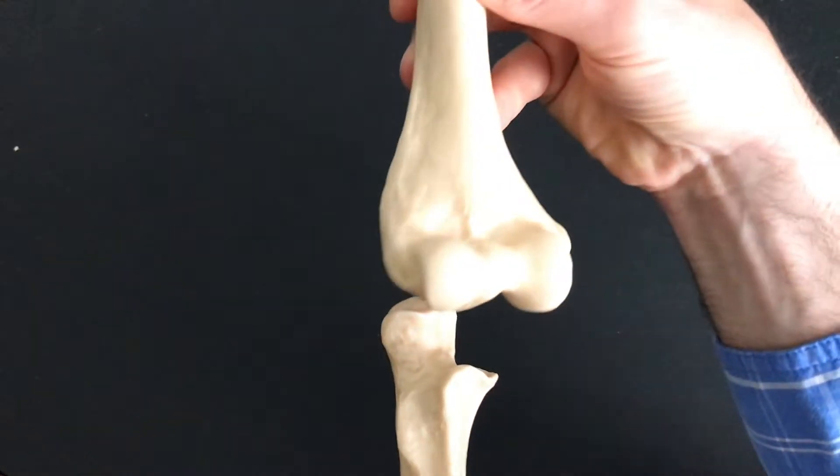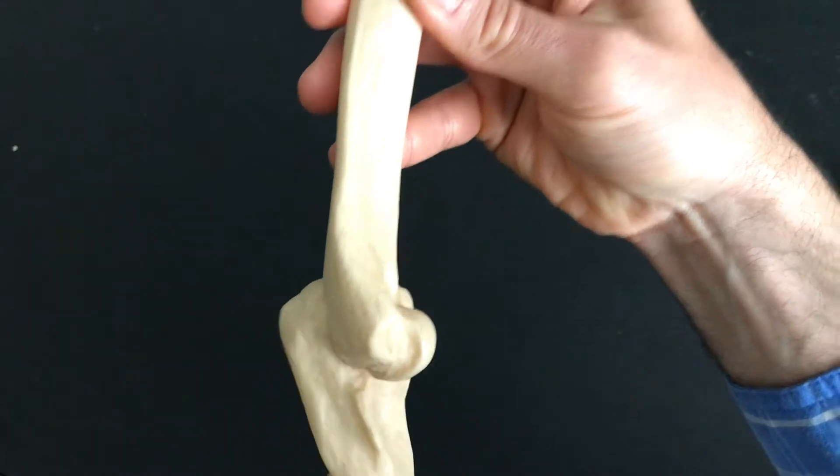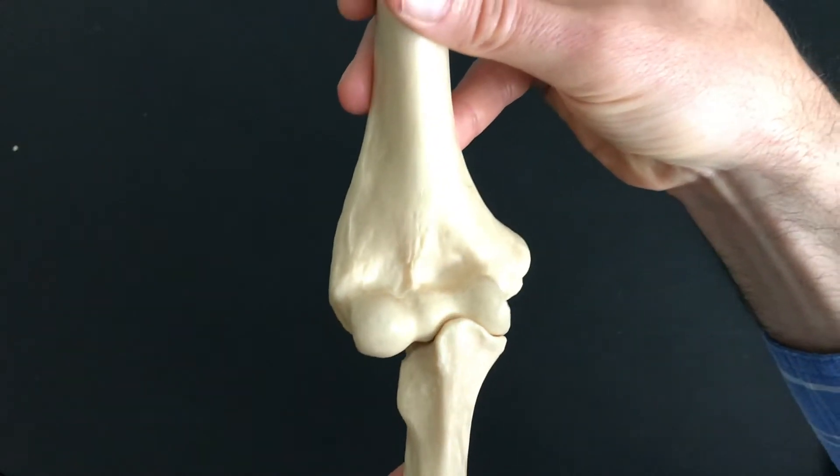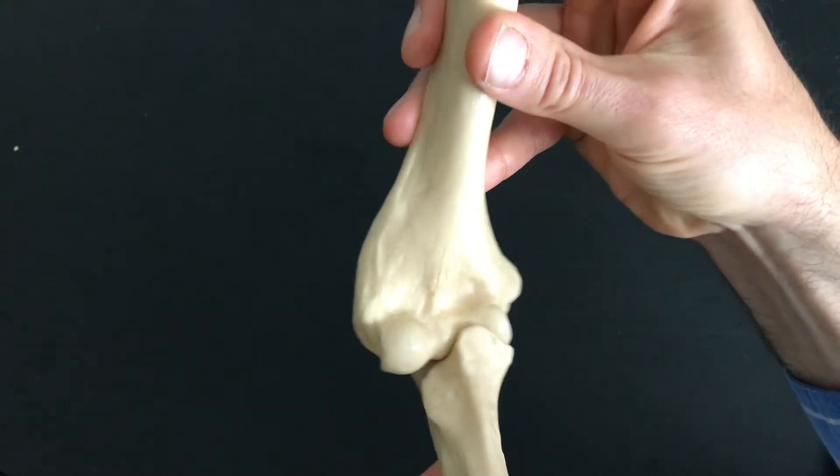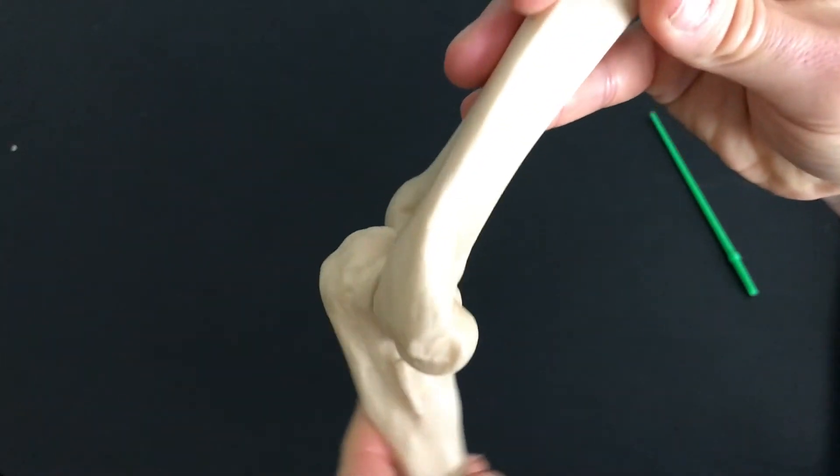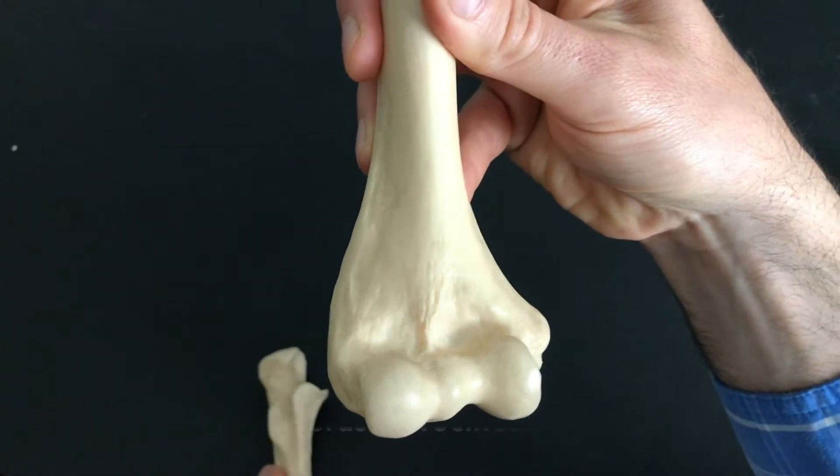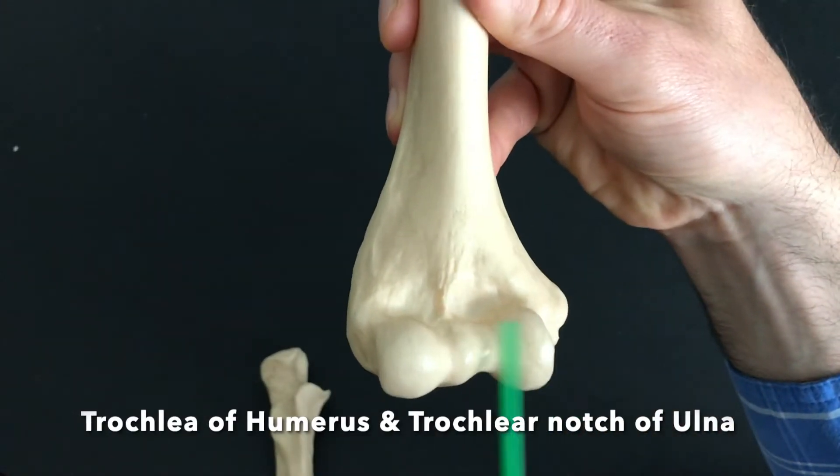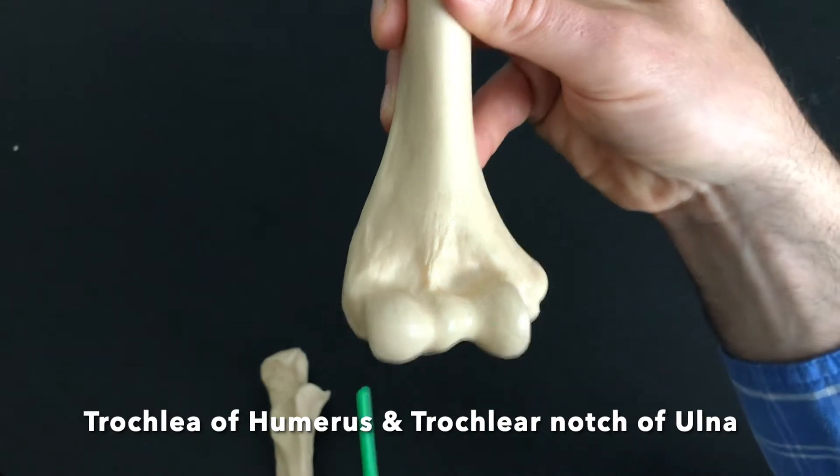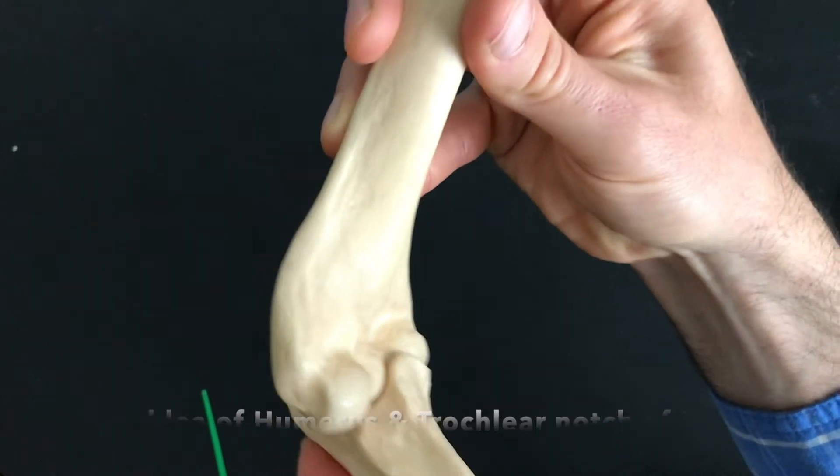When I take these two bones and they articulate together, look at how beautifully this fits in. This is you bending your elbow back and forth. So the trochlea on the humerus and the trochlear notch of the ulna are going to fit just nicely with one another.